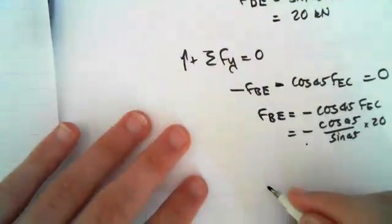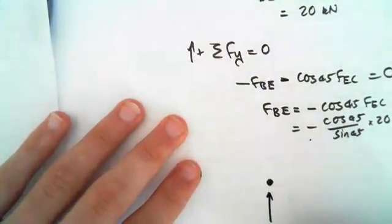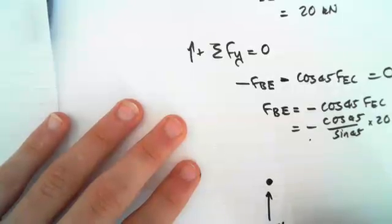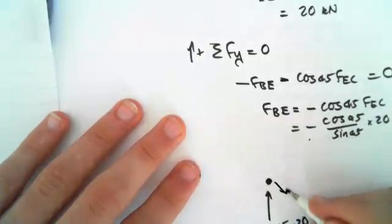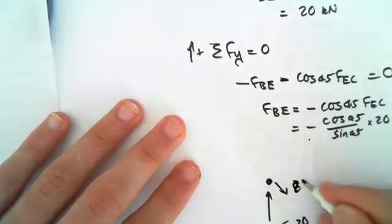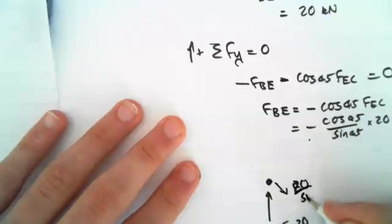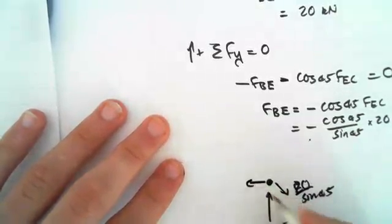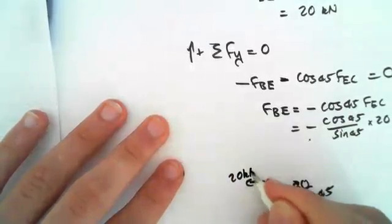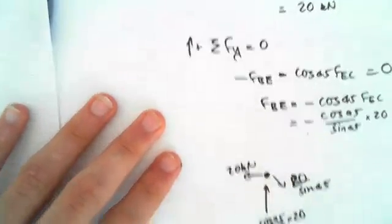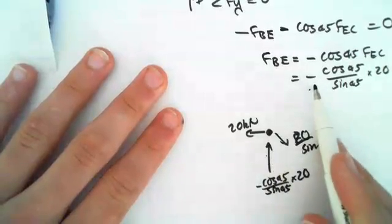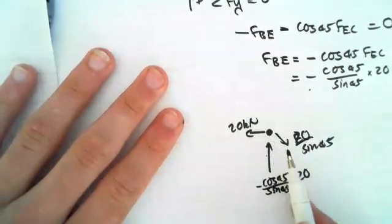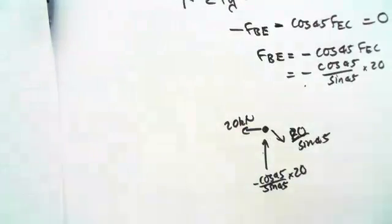So the actual what this joint would look like is cos 45, sine 45, times 20, 20 sine 45, and 20. Okay. So that's what that joint would look like, since we have to account for this negative bit, so it's pushing up into this joint.